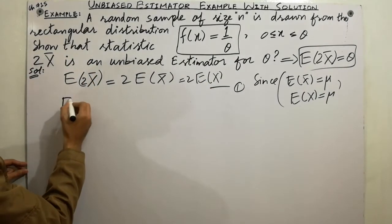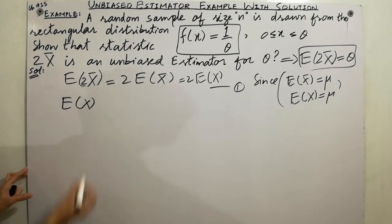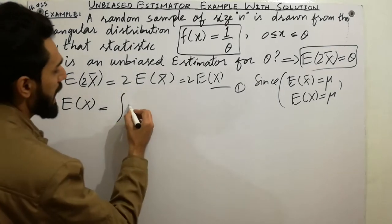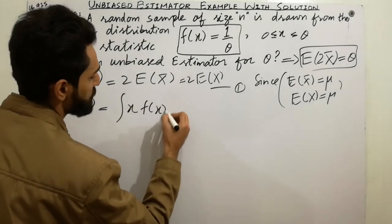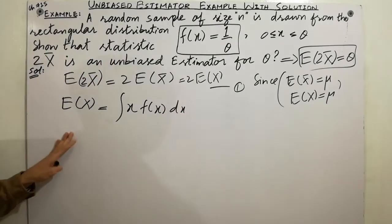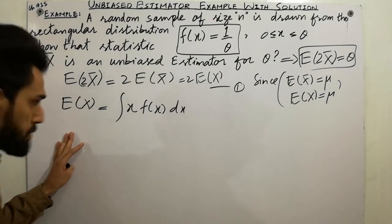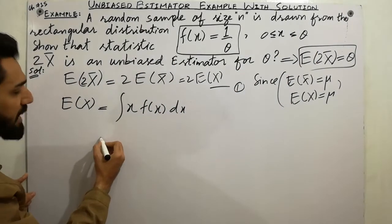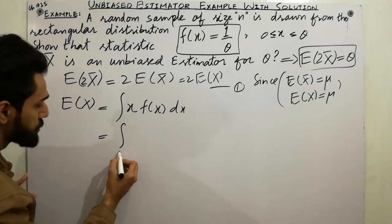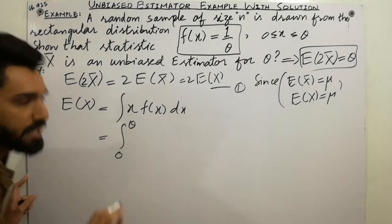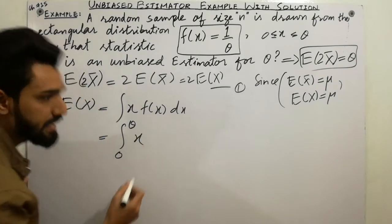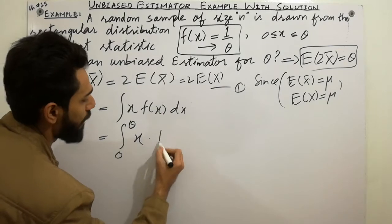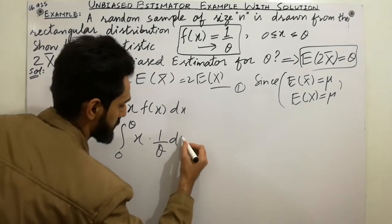Now for the next point: expectation of x is equal to the integral of x·f(x) dx, which is the formula for continuous random variables. The interval is 0 to theta, so I put the value: integral from 0 to theta of x · (1/theta) dx, since f(x) = 1/theta.